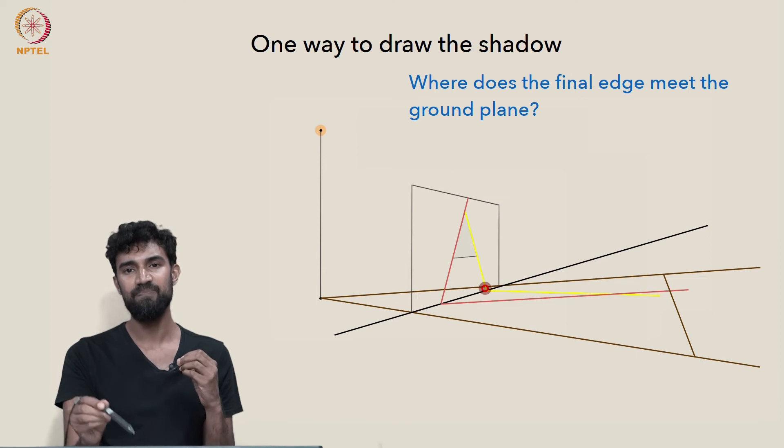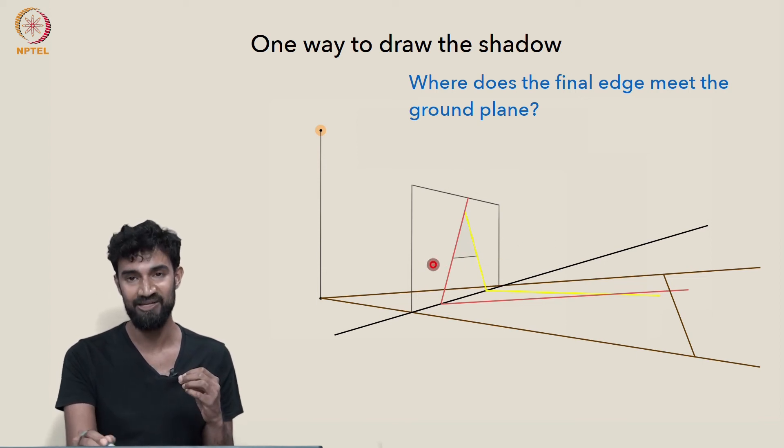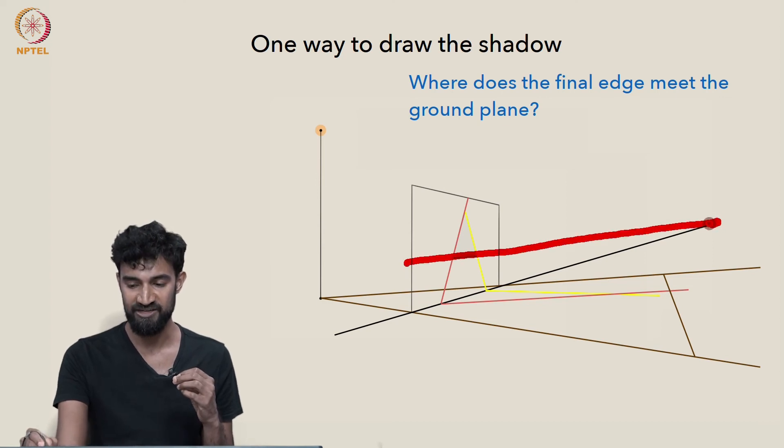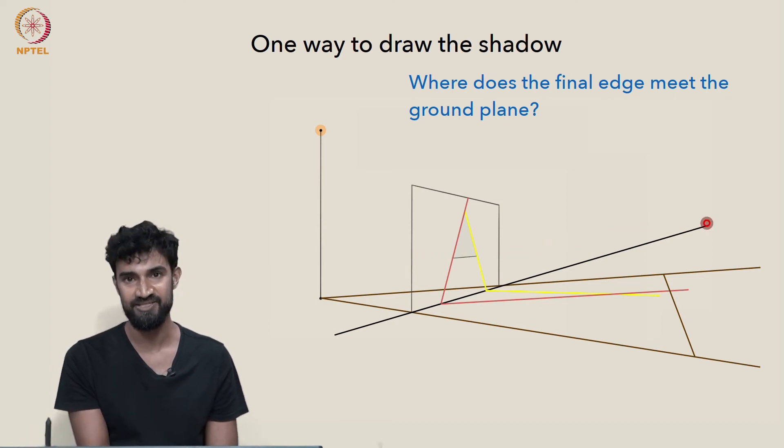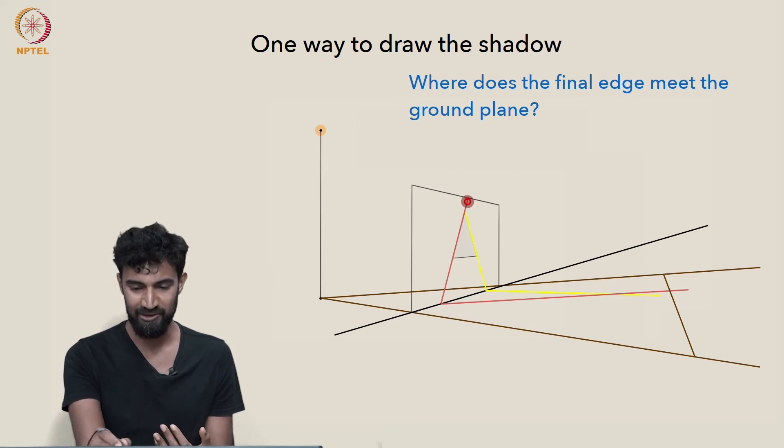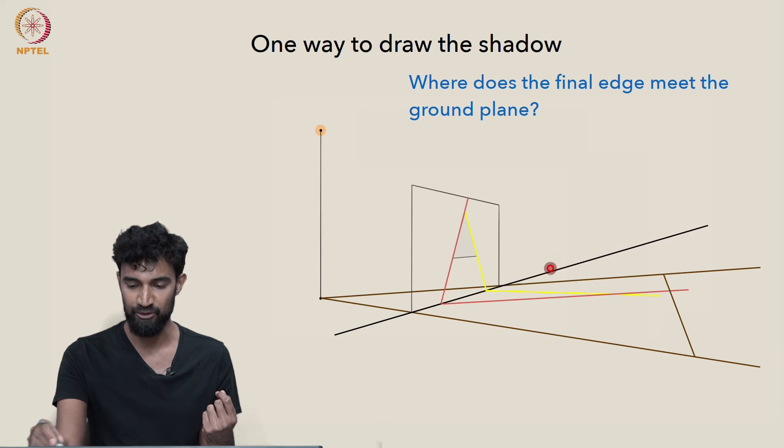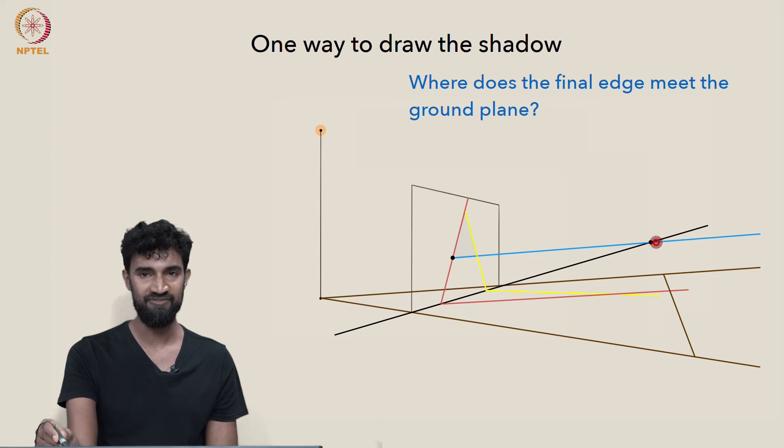But it'll eventually meet the ground plane at a point at infinity, even in that case. So we don't have to worry about whether it's parallel or almost parallel or not parallel. Eventually it's going to meet this ground plane edge somewhere, either at a concrete point or at infinity. So it meets it somewhere.